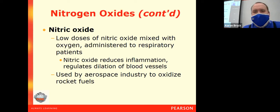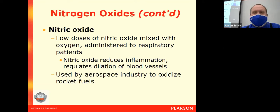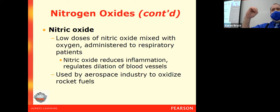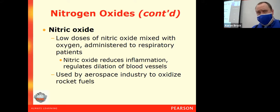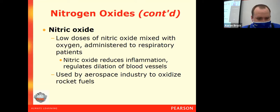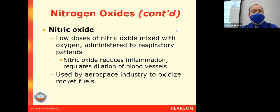Nitric oxide does have some uses other than just being a pollutant. In small doses, nitric oxide can be mixed with oxygen and given to respiratory patients. It will reduce inflammation inside the patient's body, cause blood vessels to open up slightly, and allow for better flow of oxygenated blood through the system. We also see nitric oxide used in the aerospace industry, where it is a relatively good oxidizer used to oxidize rockets.